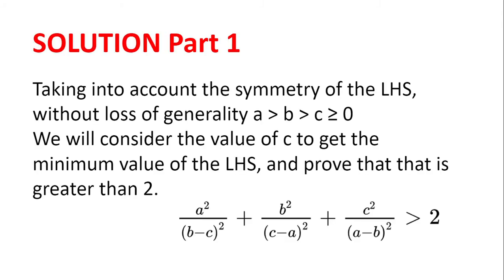Solution. Taking into account the symmetry of the left hand side, without loss of generality we have a > b > c ≥ 0, since they are non-negative. We will consider the value of c which gives us the minimum value of the left hand side and prove that that minimum value is greater than two.